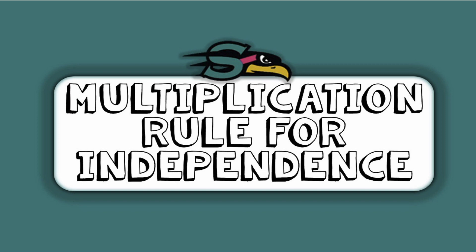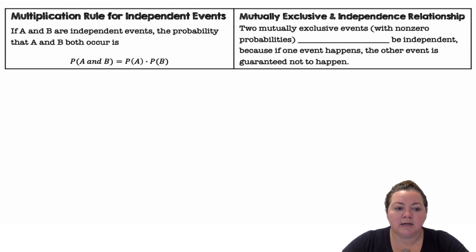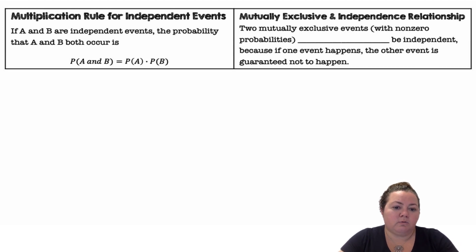Hey there Seahawks, it's Ms. Adams and in this video we're going to learn about the multiplication rule for independence. The multiplication rule for independent events says that if A and B are independent events, the probability that A and B both occur is equal to the probability of A times the probability of B. So if they're independent events, P(A and B) = P(A) × P(B).